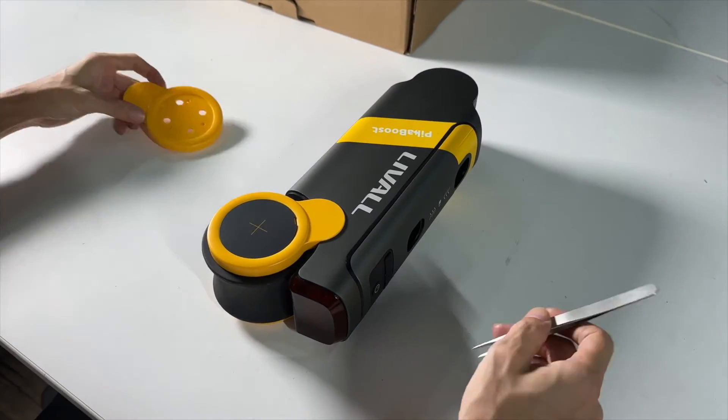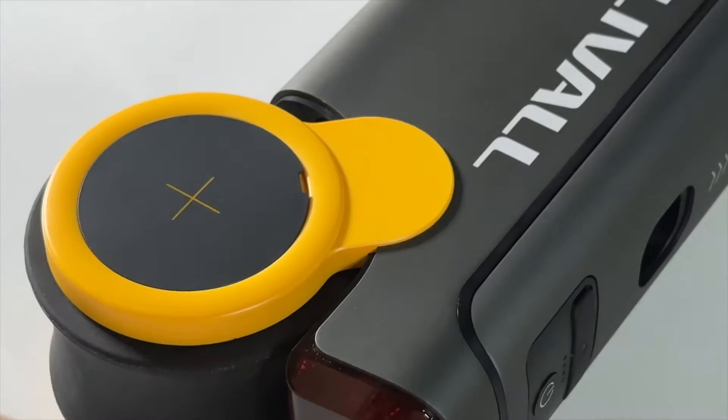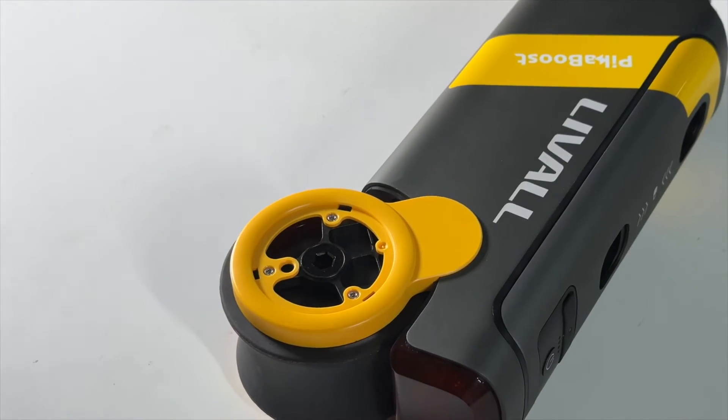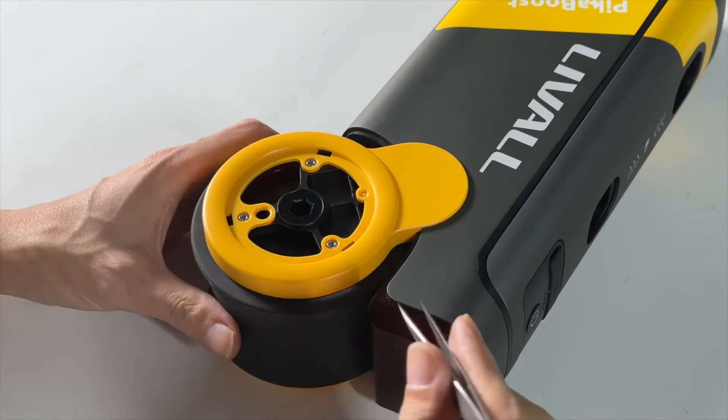When changing the tire, we should find this gap on the left side cover and open it. And then we can remove these screws to replace the tire.